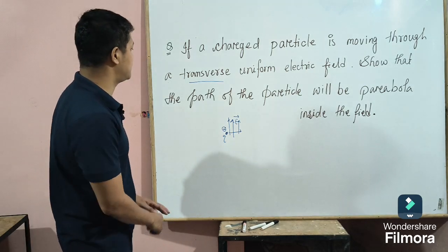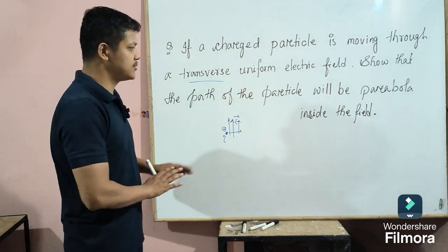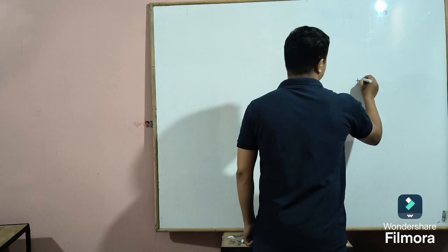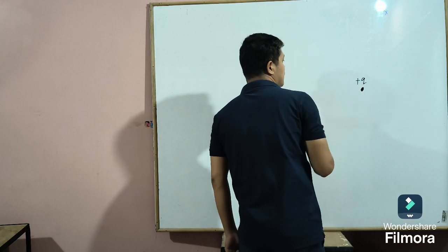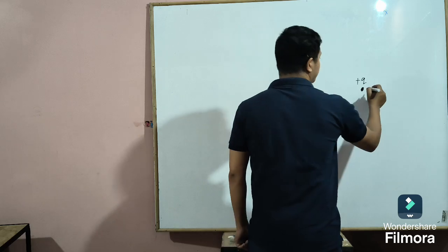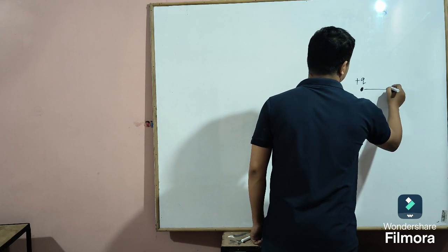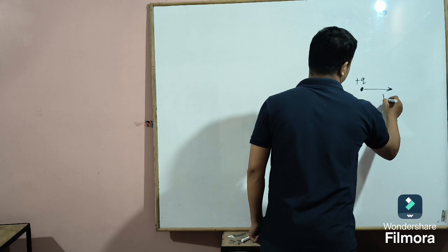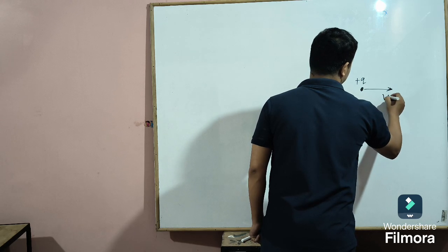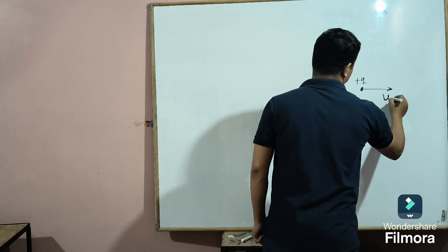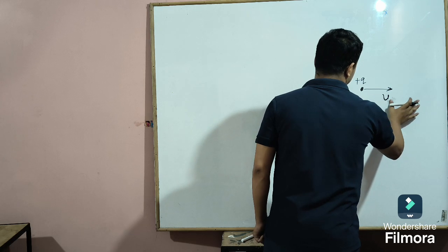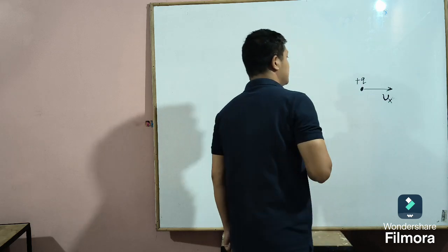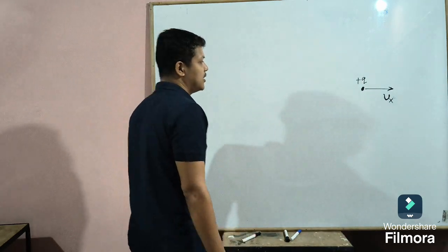Let me give you the answer. This is a charged particle — positively charged — with charge Q, and it is moving in the direction along the X axis. Its initial velocity is Ux.